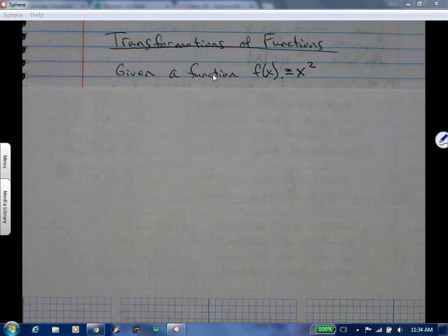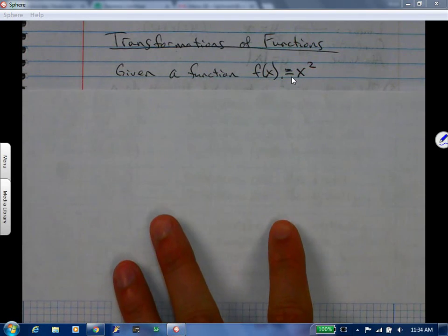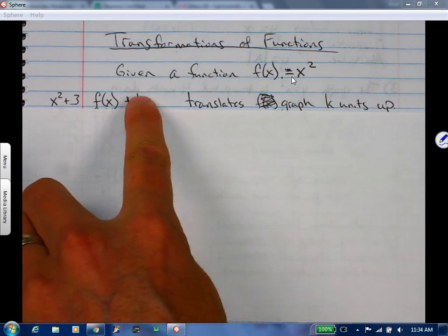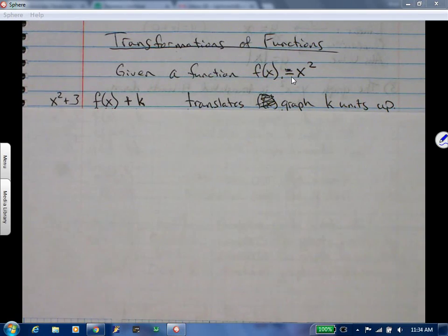So, transformations of functions. Given a function f of x, we're just going to use x squared. The first thing we'll do is if I have f of x plus k, so an example would be x squared plus 3. The k there would be considered outside the function, so it's not inside the parenthesis, it's outside the function. When things are outside the function, things get translated up. So it says translates the graph k units up.